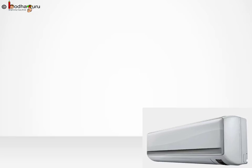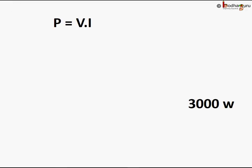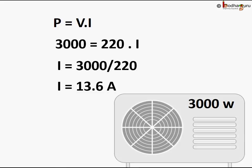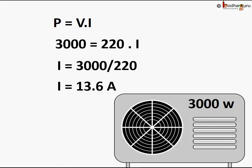But say an AC uses 3000 watt power. So how much current will it draw? P equal to V into I, so 3000 watt equal to 220 volt into I. So I will be equal to 3000 by 220 which is equal to 13.6 amperes. So typically big sockets that support 15 amp of current are used to run AC and the wire goes to 15 amp fuse.